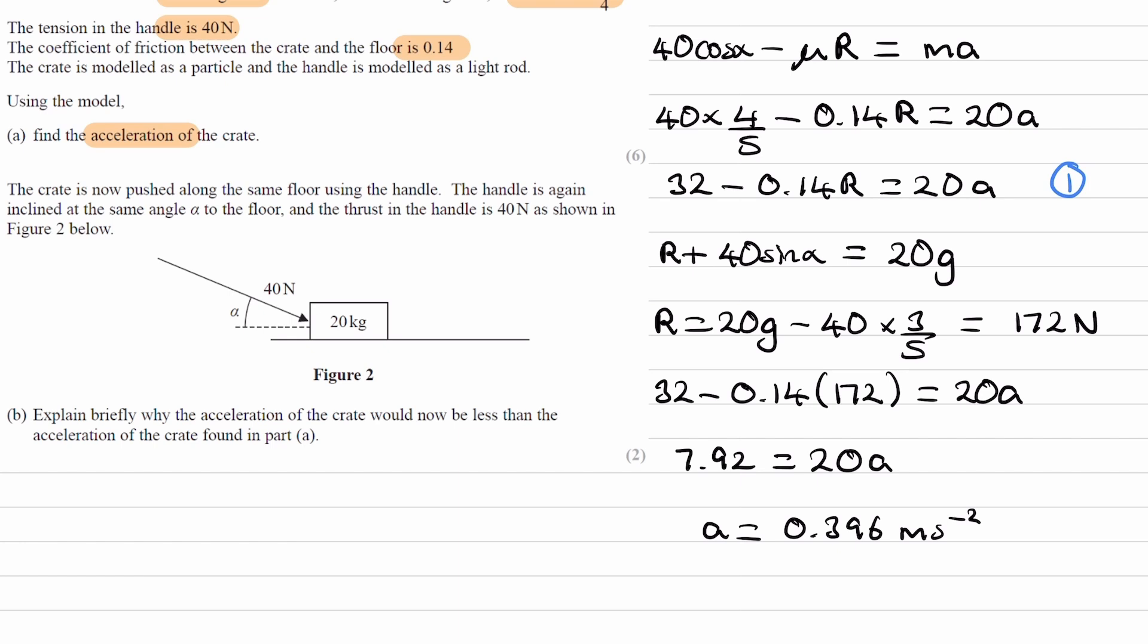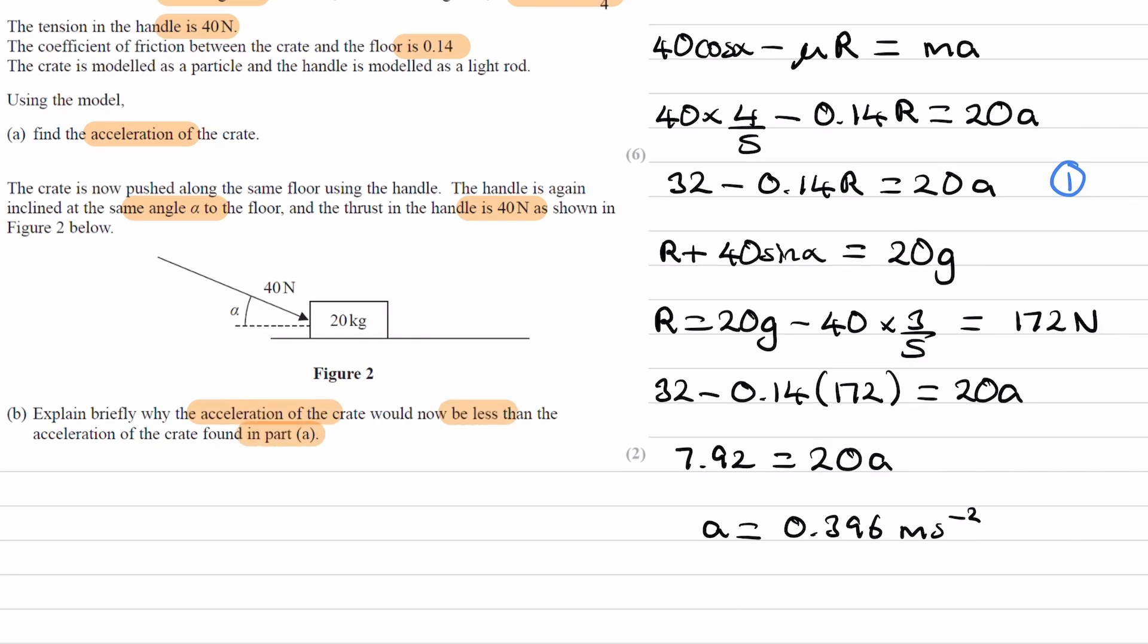Now for part B. The crate is now pushed along the same floor using the handle. The handle is again inclined at the same angle alpha to the floor, and the thrust in the handle is 40 newtons. Explain briefly why the acceleration of the crate would now be less than the acceleration found in part A. Let's consider the components of that 40 newton force. The horizontal component is still 40 cos alpha. But the key difference is now that 40 sin alpha acts downwards into the ground.